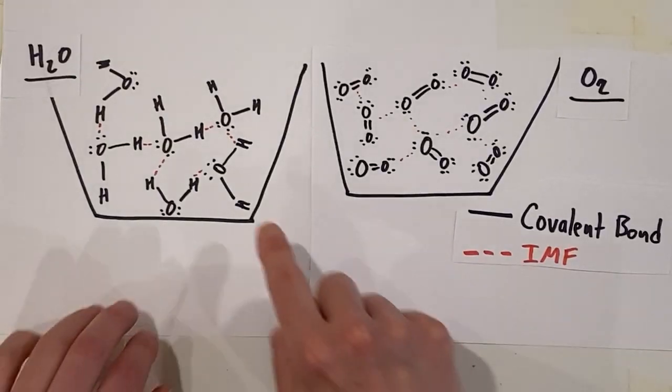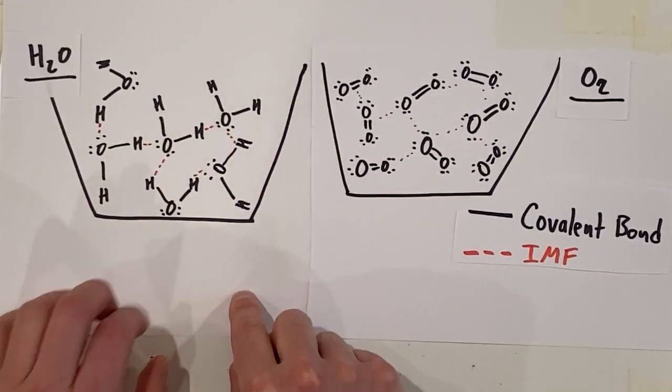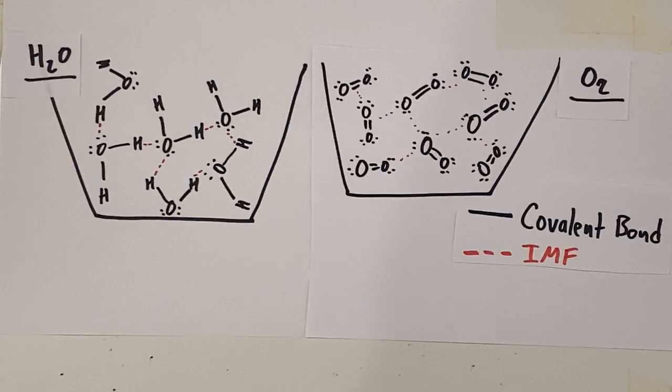And the dotted red lines represent the IMFs. These are the intermolecular forces, the force of attraction that are holding together separate molecules.